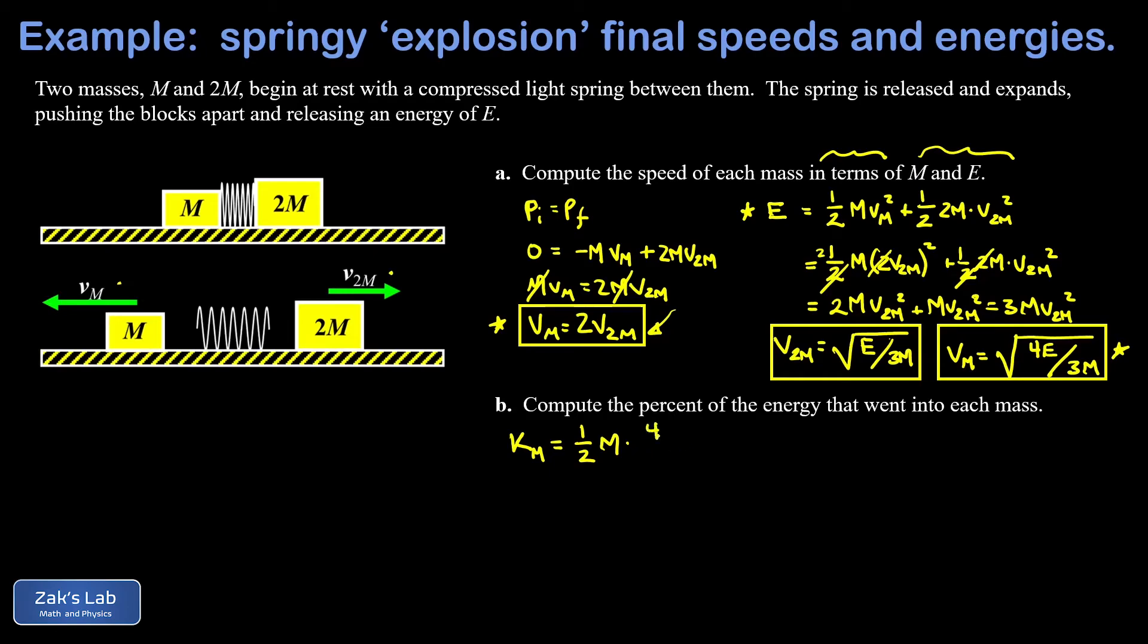And when I square that I get 4E over 3m. Canceling my m's I find that 4 over 6 times E, in other words two-thirds E or 2E over 3 is the kinetic energy in that smaller mass, meaning that it got two-thirds of the total energy and that's about 67 percent.